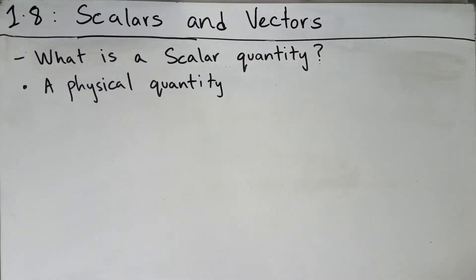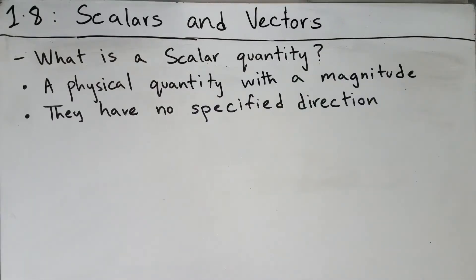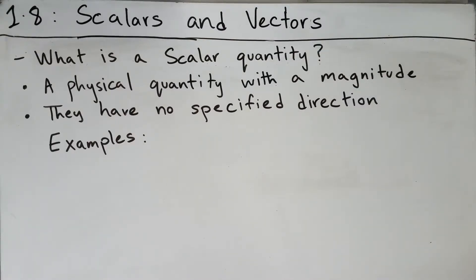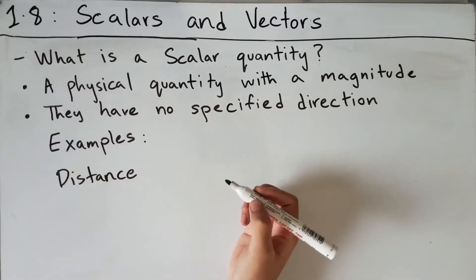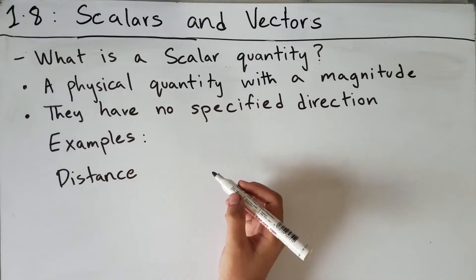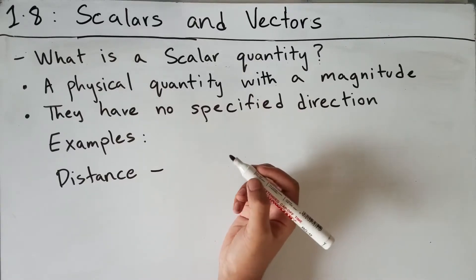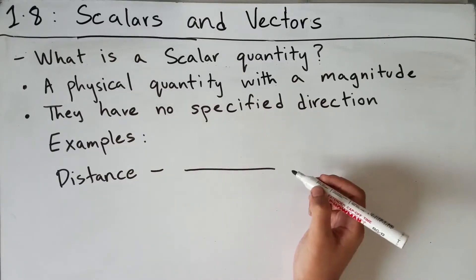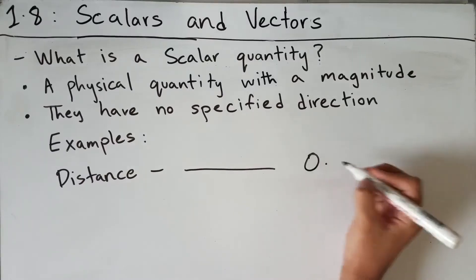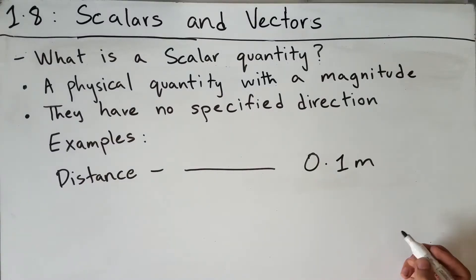So what is a scalar quantity? A scalar quantity is a physical quantity which has magnitude but no specified direction. What are some examples of scalar quantities in physics? One of them is distance, measured in meters. For example, this line I've drawn has a distance of 0.1 meters.